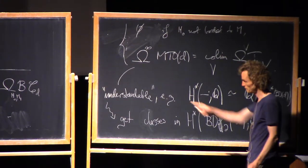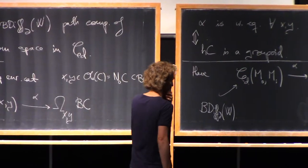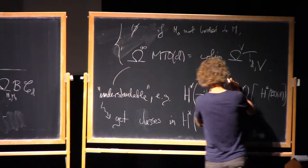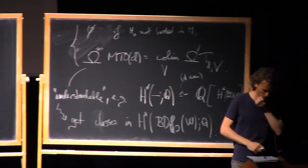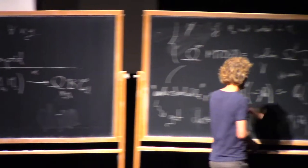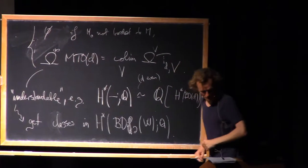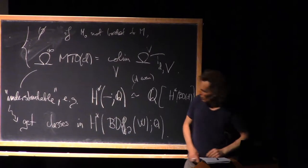So I get cohomology classes in cohomology of BDIF boundary of W. So just by pulling back. Okay. Maybe I should say this is for D even. And there's a similar answer if D is odd. And this means, yeah, Z graded commutative algebra.